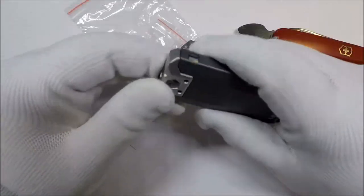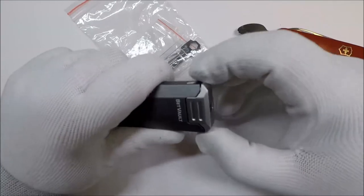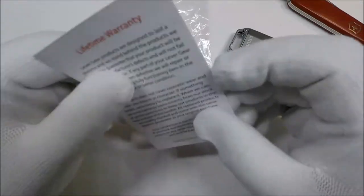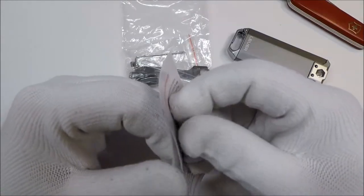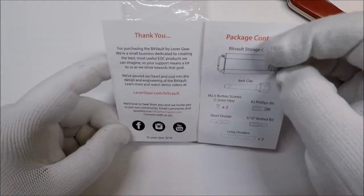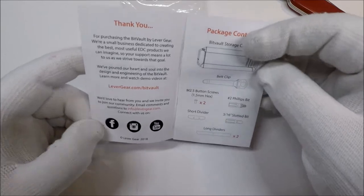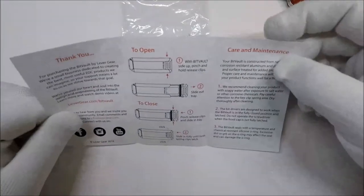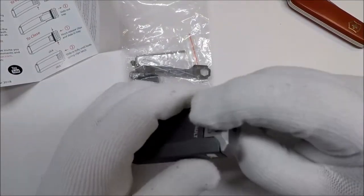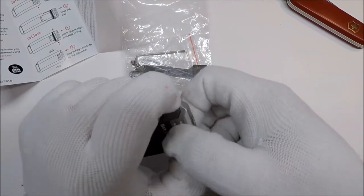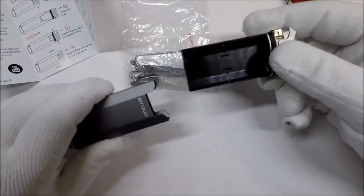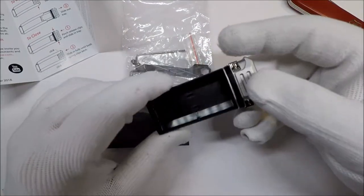Alright, so let's see. Can we squeeze and pull, maybe? It's sort of painful that we need instructions, but I'm going to look at the instructions. Thank you for purchasing the Bit Vault by Lever Gear. To open, pinch the sides and slide the tray out. Alright, so I pinch the sides, slide the tray out. Oh. Okay, that's interesting.